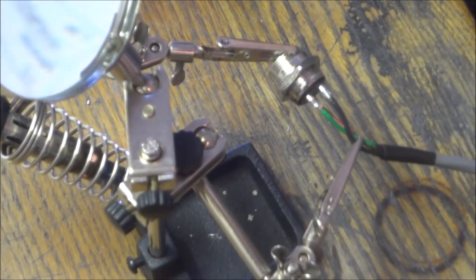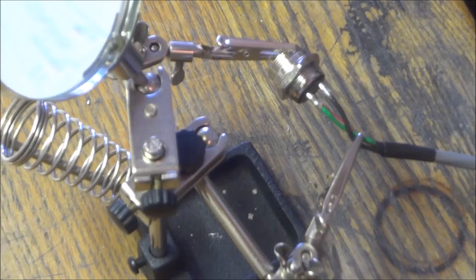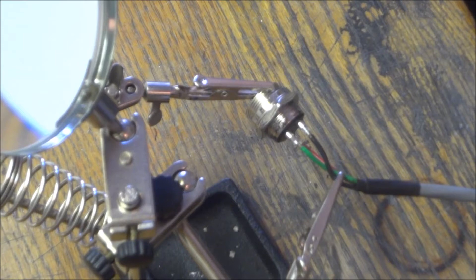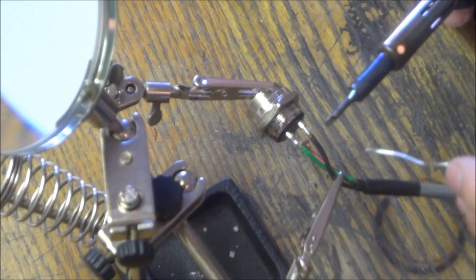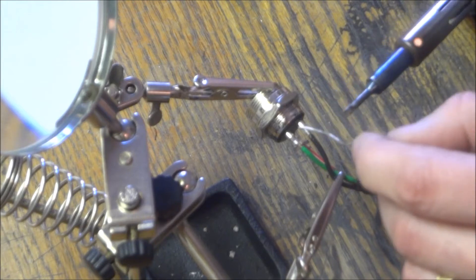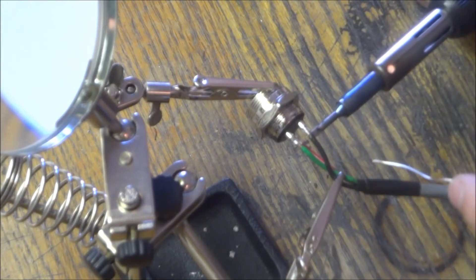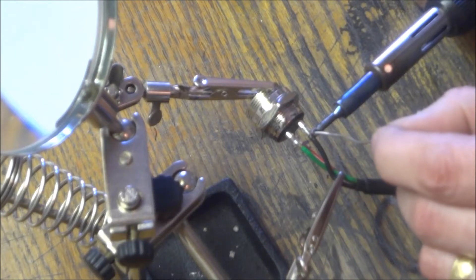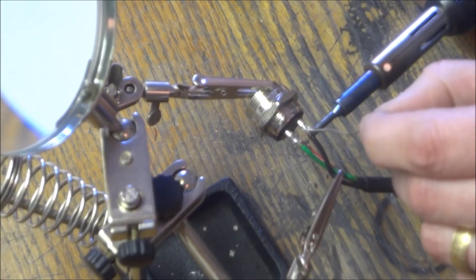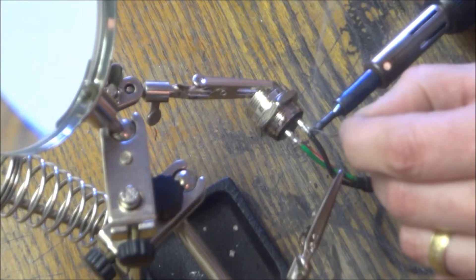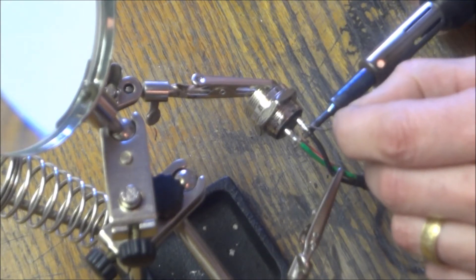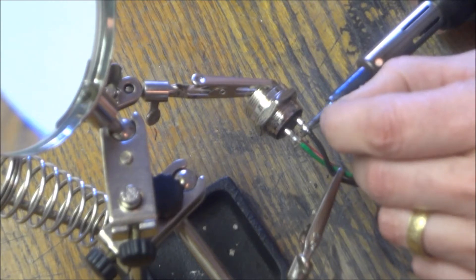These little contraptions really do help when it comes to soldering these. Now again, what you want to do is try not to heat up the pin too hot so that you don't melt the plastic here. But you want to get it on the copper and the pin, touch the solder to the iron to get it flowing, and then draw it over to the copper, like so.